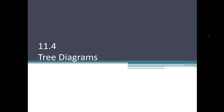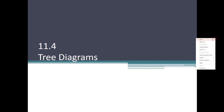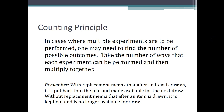So what we're going to do in section 11.4 is learn about something called a Tree Diagram that can be helpful in listing all of your possible outcomes and then going from there and deciding, okay, looking at this list here, now I can figure out my probability.